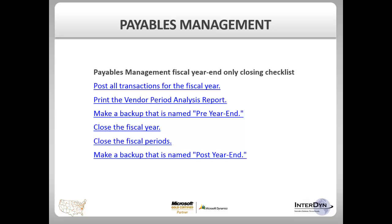If you are doing your fiscal year-end closing only, these are the steps required. If your fiscal year falls other than a calendar year, this process may take place at some other point of the year. Post all transactions for the fiscal year. Print the Vendor Period Analysis Report. Make a backup named Pre-Year End. Close the fiscal year. Close the fiscal periods. Then make a backup named Post-Year End.